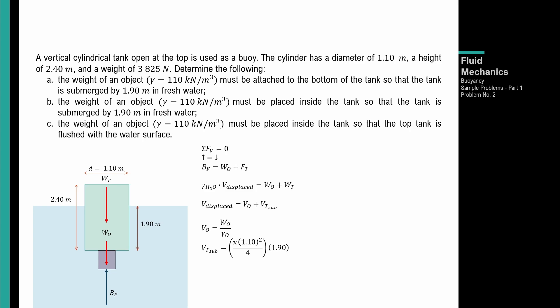Tapos naman yung volume ng tank na nasubmerge — dahil cylinder, volume equals area ng base times height. Area ng base: pi D² over 4, multiply sa 1.9 dahil yun yung nakasubmerge. So therefore: 9.81 times volume displaced equals w_o over 110 kN/m³ plus volume ng tank submerged. Para dun sa volume displaced: pi × (1.10)² / 4 × 1.90.